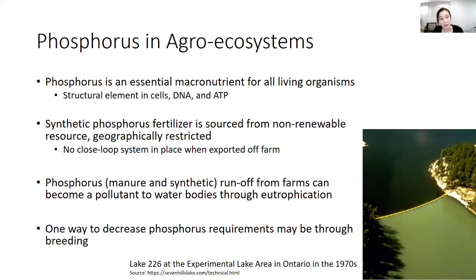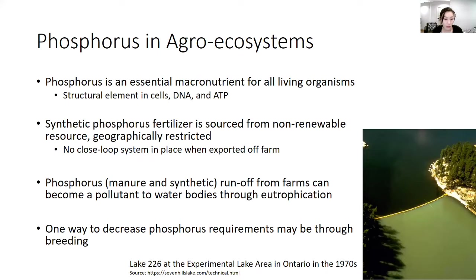Phosphorus in agroecosystems is a bit of a double-edged sword, as it's an essential macronutrient for all living organisms. However, synthetic phosphorus fertilizer is sourced from non-renewable resources, it's geographically restricted, and there's no closed-loop system in place when it's exported off-farm as food or feed. Phosphorus from manure and synthetic sources can run off from farms and become a pollutant to water bodies through eutrophication. So we can have a little bit too much, and we can also have a little bit too little. One way to decrease phosphorus requirements on farm may be through breeding.